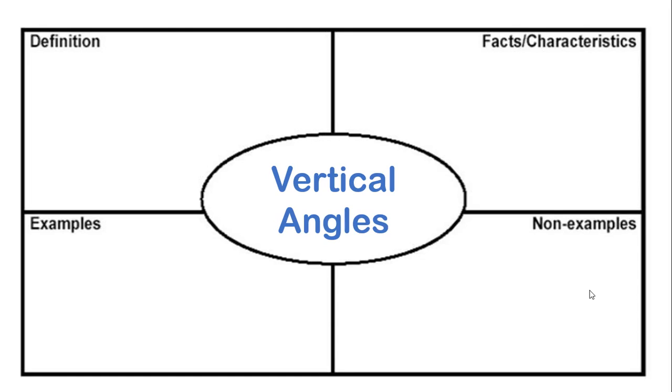You're going to start first with the definition. What are vertical angles? And this you can search on Google or textbooks or anything that you can find. So you start with the definition. Vertical angles are pairs of opposite angles made by intersecting lines.